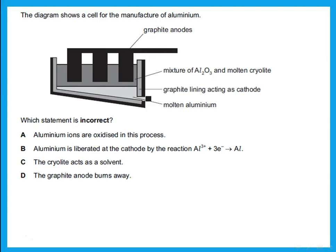The first statement says aluminium ions are oxidized. Aluminium ions are supposed to gain electrons; gain of electrons is reduction, so that is not correct. Aluminium is liberated at the cathode — that actually is correct. So the answer is A, because aluminium ions are not oxidized, they are reduced. Cryolite acts as a solvent and graphite anode burns away are both correct.